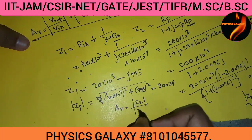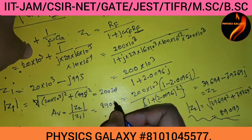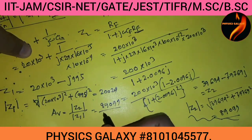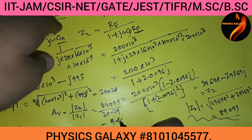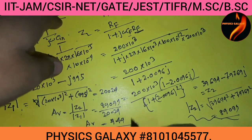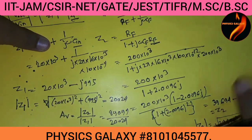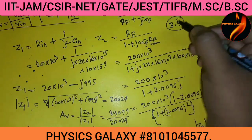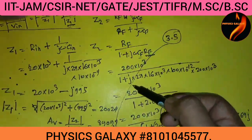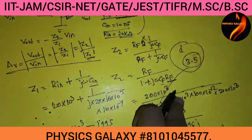The magnitude of the voltage gain Av equals |Z2| divided by |Z1|, which is 89099 divided by 20024, giving 4.44. Among the options, 3.5 is the closest to this value, so the answer is option D, 3.5. This is the complete solution for this problem.